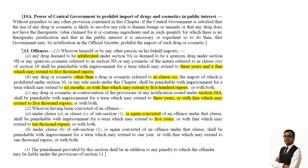Section 10A says that the central government has the power to prohibit import of drugs or cosmetics in public interest. If the central government is satisfied that the use of any drug or cosmetic is likely to involve any risk to human beings or animals, or if the drug does not have any therapeutic value claimed, or it contains ingredients in such quantity for which there is no justification, then in the public interest the government may by notification in the official Gazette prohibit the import of such drugs and cosmetics.